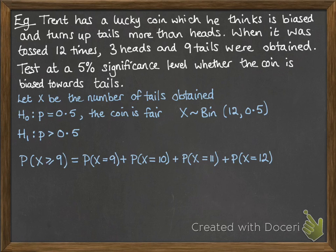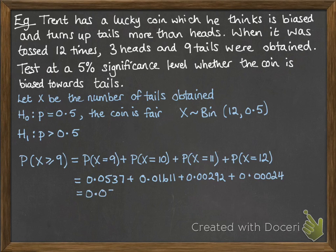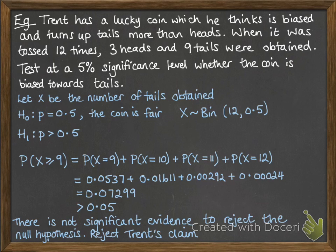We want the probability that X is greater than or equal to 9 — not just X equals 9 — so we add up all values from 9 through 12. That gives 0.07299, which is bigger than 0.05, or bigger than 5%. That means it's not in the critical region, so there is not significant evidence to reject the null hypothesis. We reject Trent's claim that his coin is biased and accept the null hypothesis that the coin is fair, because the result does not give evidence that the probability of that happening is less than 5%.